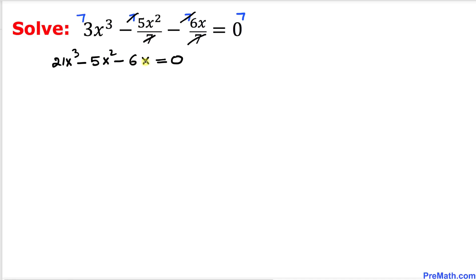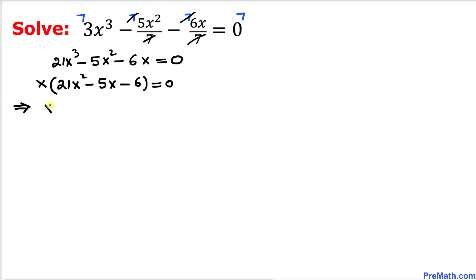We can see that x is common among all these terms. So we can factor x outside: in the parentheses we get 21x² minus 5x minus 6, equal to 0. Now we have two factors equal to 0.